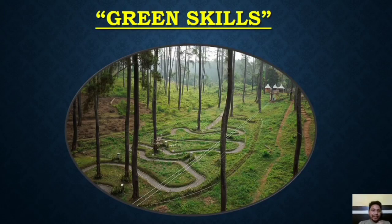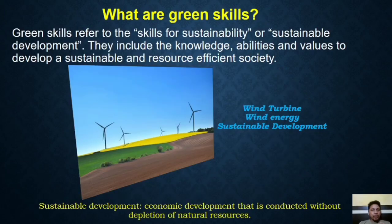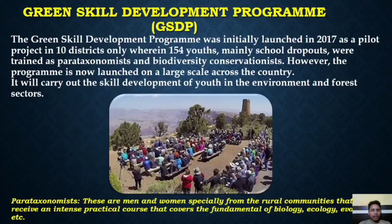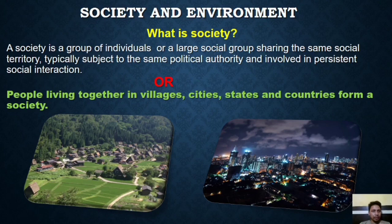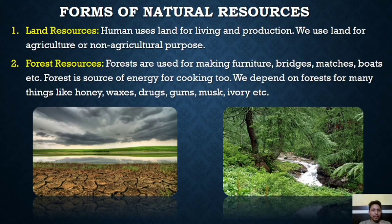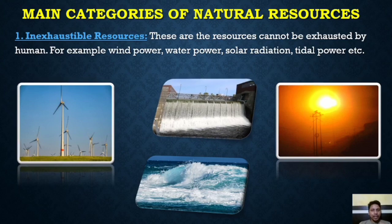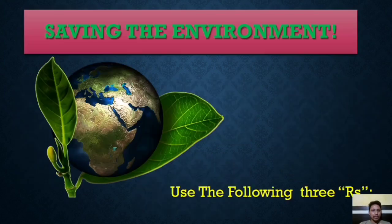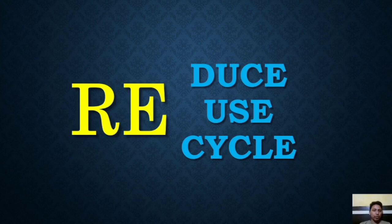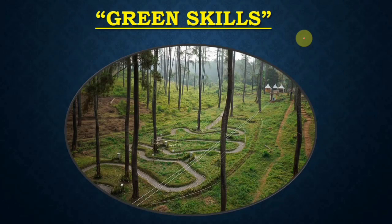Hello friends, today we are going to discuss green skills, one of the very important chapters in your syllabus. We will discuss what green skills are, then a special program launched by the Government of India — GSDP — then society and environment, different forms of natural resources, main categories of natural resources, and finally saving the environment under three headings: reduce, reuse, and recycle.